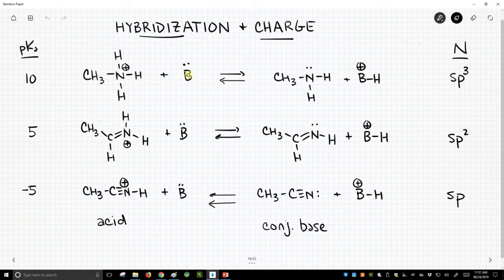The base plucks off the proton, and we get this neutral nitrogen with a lone pair. The exact same thing happens in the next two reactions. We have a nitrogen plus that loses a proton and gives a neutral nitrogen, and again, nitrogen plus goes to a neutral nitrogen.